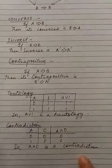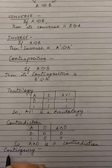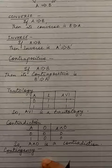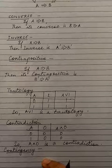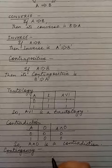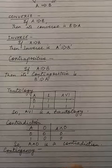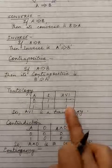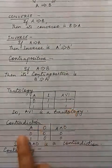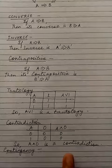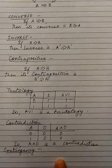One more term is contingency. When we construct a truth table, the values in the columns may be zeros or ones. If the final result of the truth table consists of a combination of zeros and ones, it is called a contingency. That means if it is not a tautology and not a contradiction, then it is a contingency. In tautology the output is always one, in contradiction the output is always zero, and in contingency the output is a combination of zeros and ones.